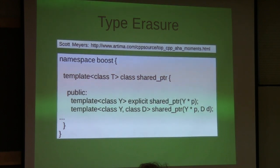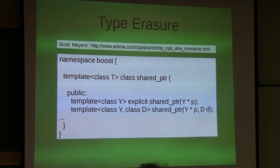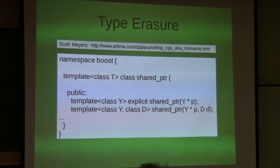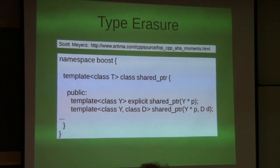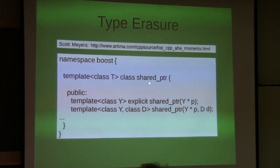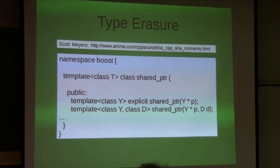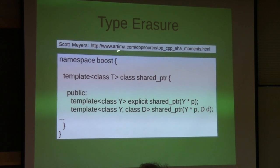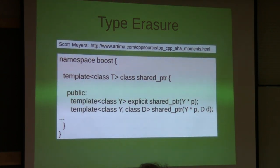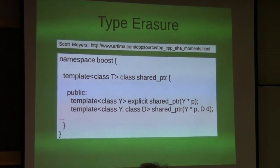He used the specific example of shared pointer in Boost. Shared pointer was Boost for the longest time - I started using Boost in the 90s for shared pointers. What Scott pointed out is that in addition to the constructor that takes a regular pointer, there's another constructor that takes a deleter, which will destroy the object when the reference count goes to zero. The class is templatized with class T, and the deleter is class D - a completely different class. This class is introduced in the constructor but it's not in the class itself. That is the aha moment.